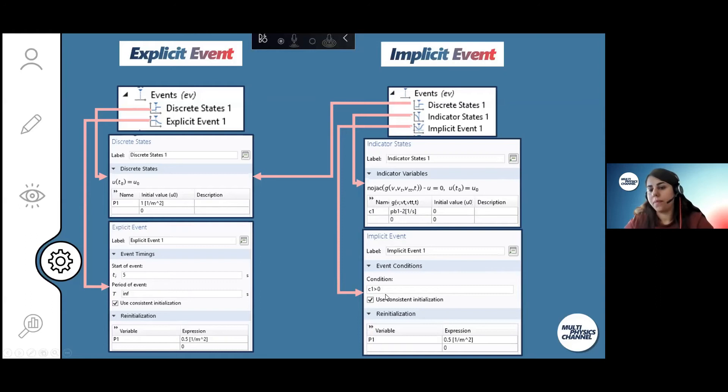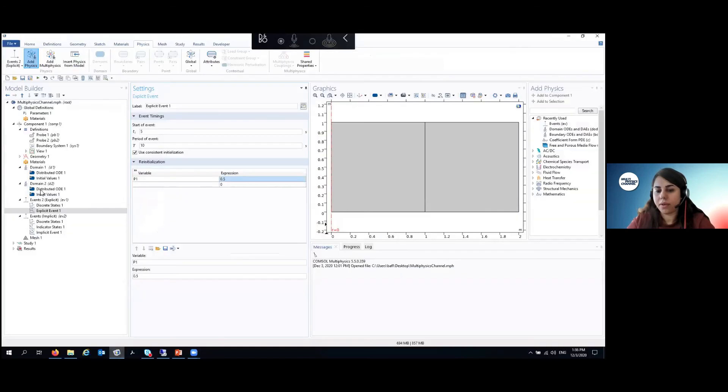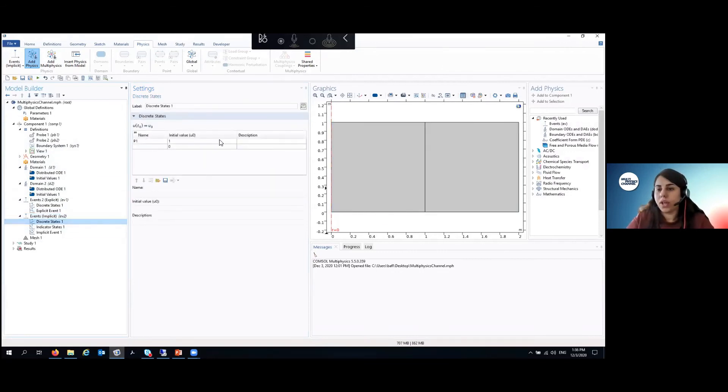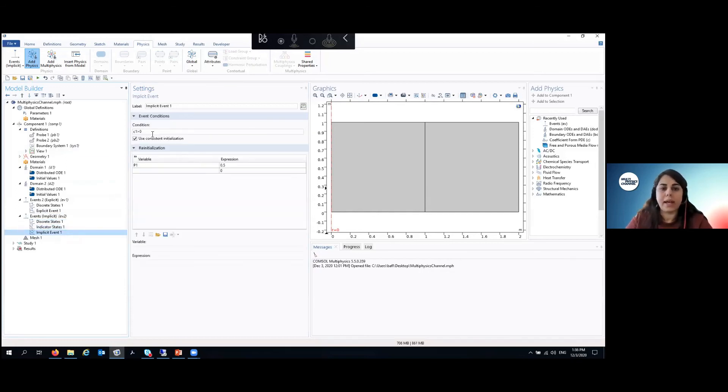I can say, okay, when c1 is bigger or smaller than zero, something happens. And this is the value that I want for my model. This is the state, the indicator state, and the condition and the new value that I want for my parameter.